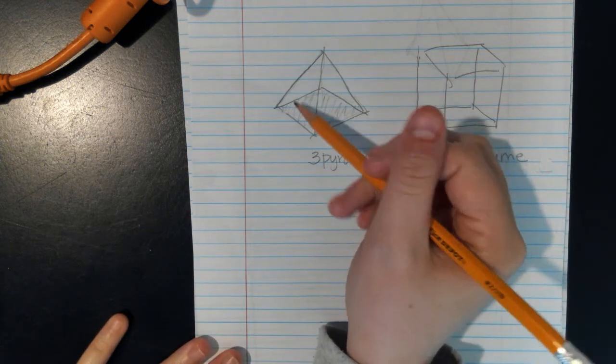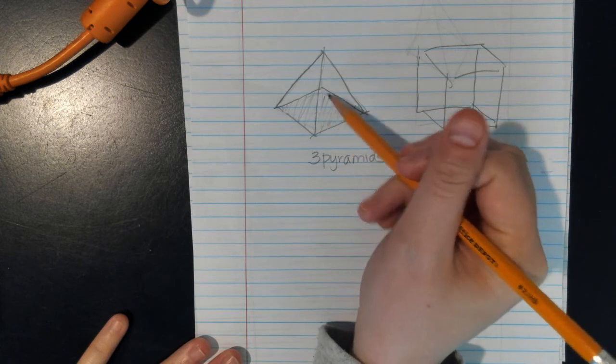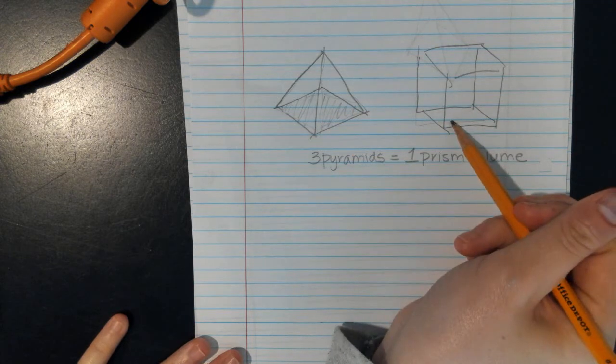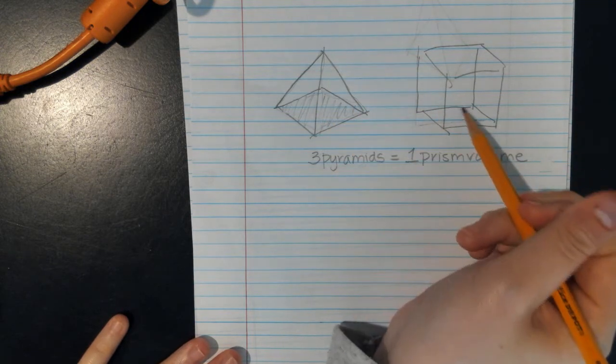So from the video, we saw that three of the pyramids, when you filled them up and you poured them into the prism, three of them filled that prism.